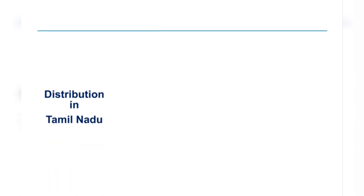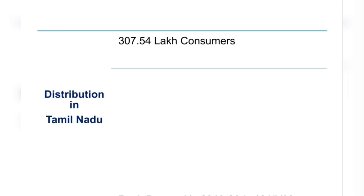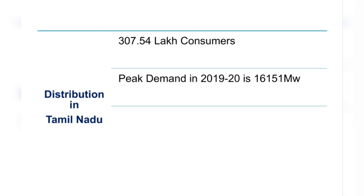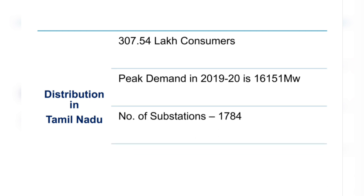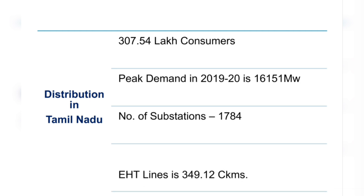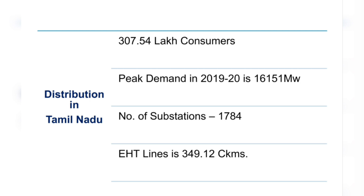The number of consumers in Tamil Nadu is about 307.54 lakh. The peak demand during 2019-20 is about 16,151 megawatts. At present, the number of substations is 1,784 and the extra high tension line constitutes about 349.12 circuit kilometers.